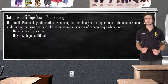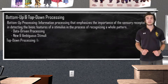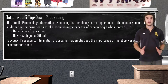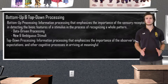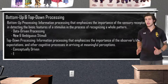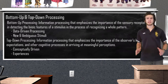While bottom-up processing is data-driven, top-down processing is going to be conceptually driven. Top-down processing emphasizes the importance of the observer's knowledge, expectations, and other cognitive functions in arriving at a meaningful perception. With top-down processing, your brain applies what it knows and what it expects to perceive, and then fills in the blanks.